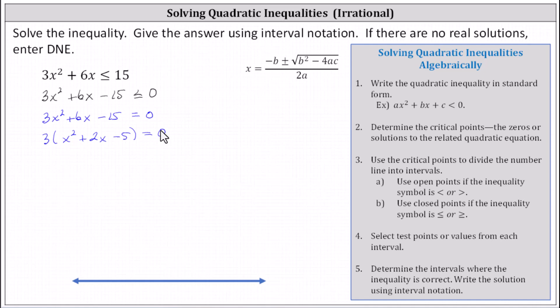Unfortunately, x squared plus 2x minus five is not factorable. There are no factors of negative five that add to positive two, which means to find the critical points we'll have to use the quadratic formula, which is shown here on the right.